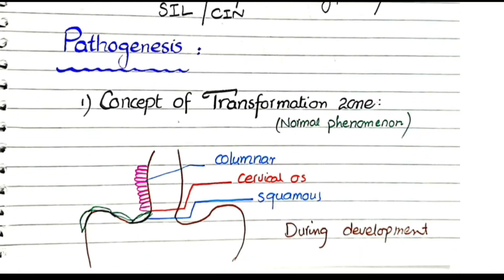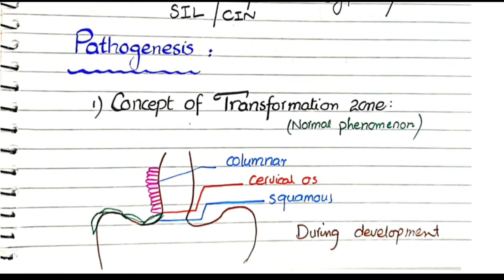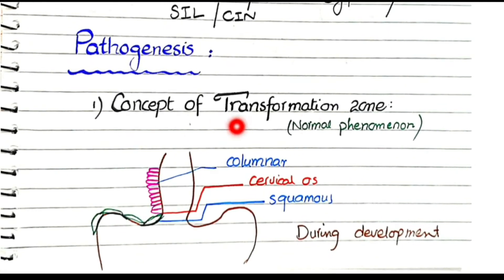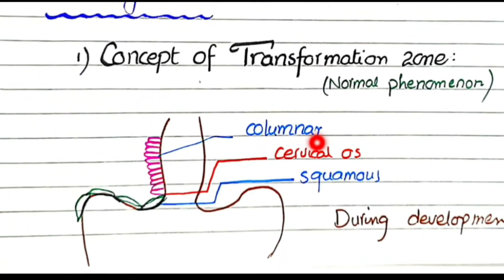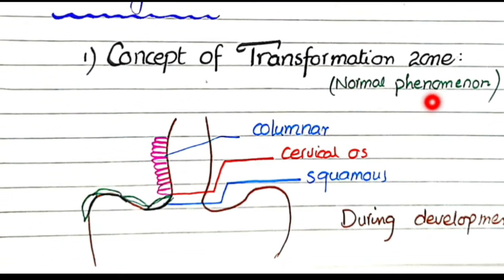The first point in the pathogenesis of carcinoma of the cervix is the concept of the transformation zone. The development of the transformation zone is itself a normal phenomenon, but this transformation zone plays a very important role in the pathogenesis of cervical cancer or cervical neoplasia.